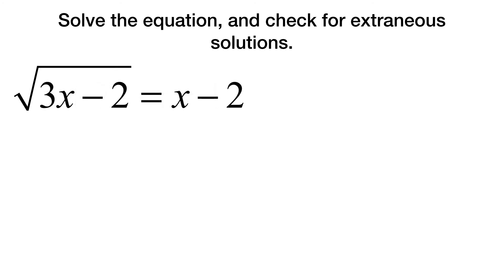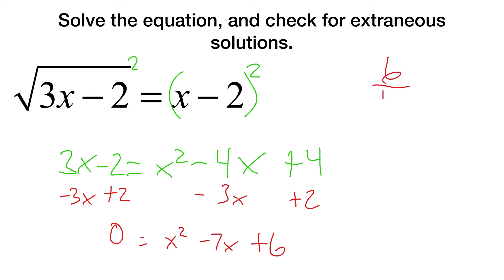Now let's try this last one. We square both sides. In this case we get 3x minus 2 equals x squared. And in the middle you'd have minus 2x minus 2x, so minus 4x in the middle. At which point, minus 3x plus 2. Minus 3x plus 2. x squared minus 7x plus 6. Two numbers that multiply to be 6 and add up to be negative 7 will be 1 and 6. 0 equals x minus 1 times x minus 6.